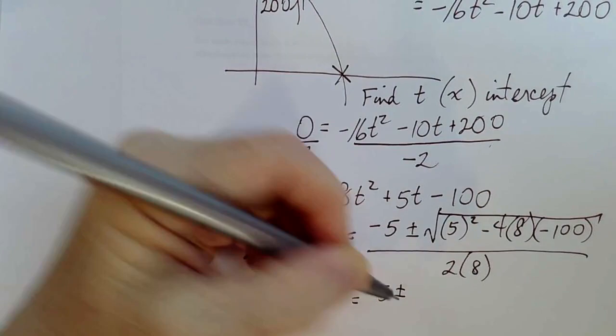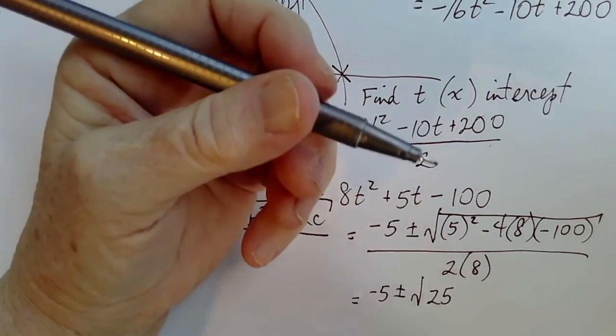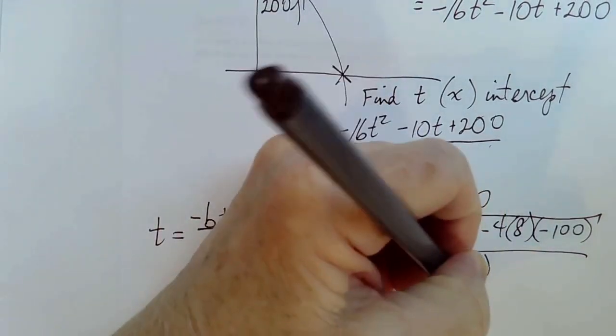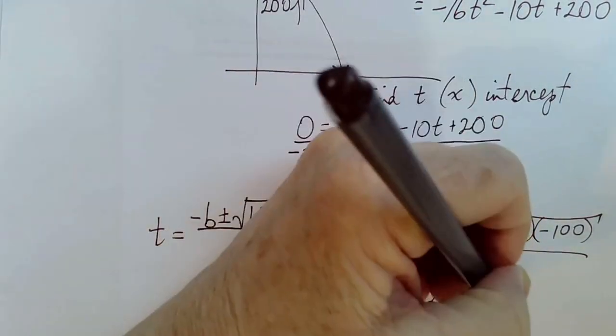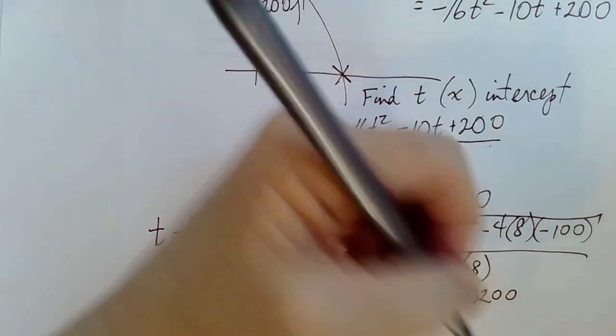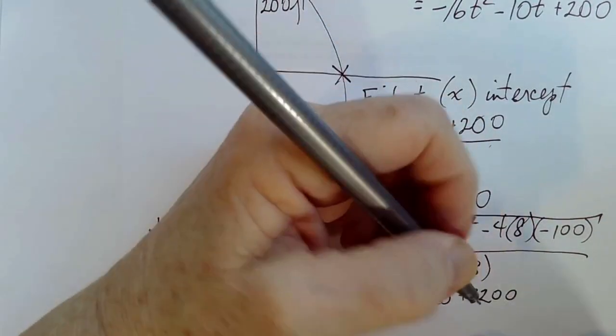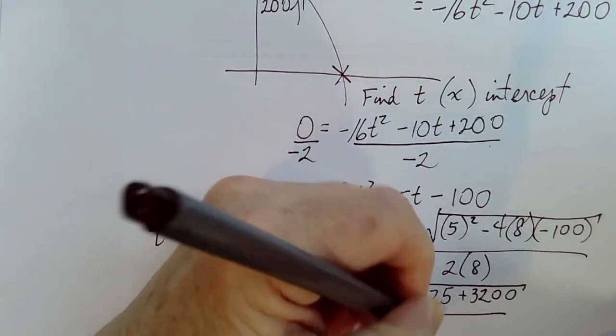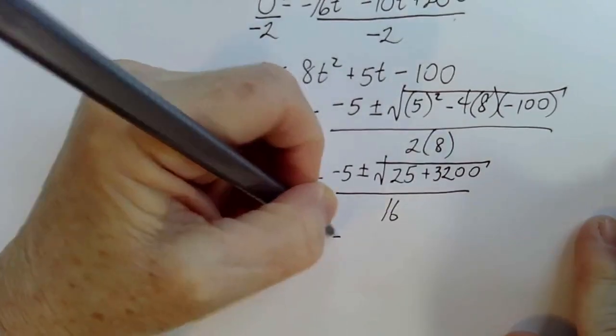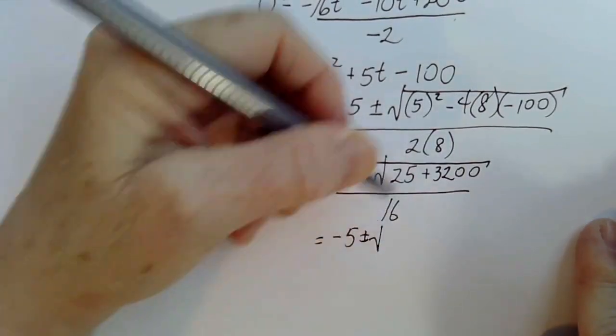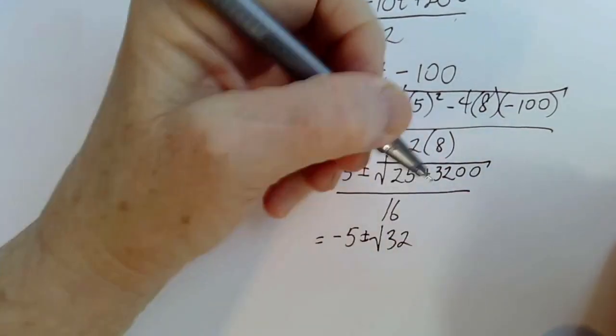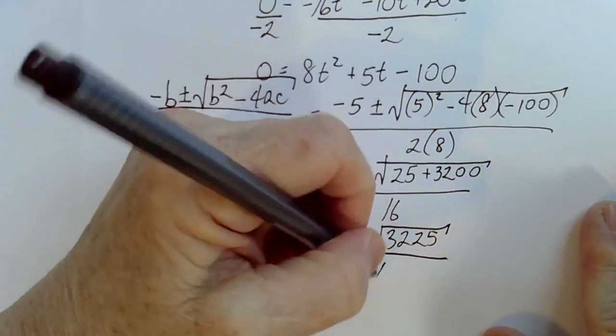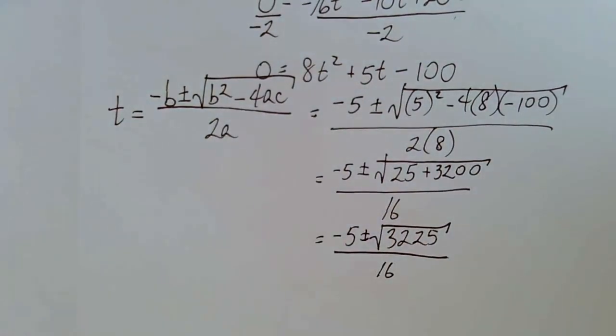So negative 5 plus or minus 25. And let's see, 800 times 4, 8 times 4 is 32. So this is 3,200. And that's what we're going to find the square root of, and then divide it by 16.